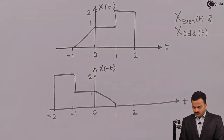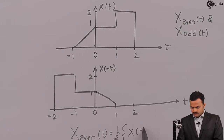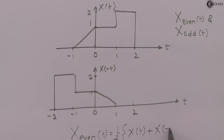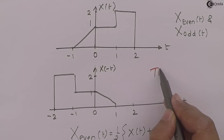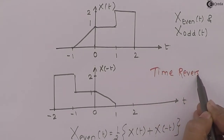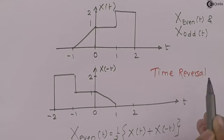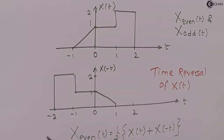The even part we know is given by half of x of t plus x of minus t. x of t was given, and x of minus t we obtained by doing time reversal of x of t. Now we need to add these two signals.